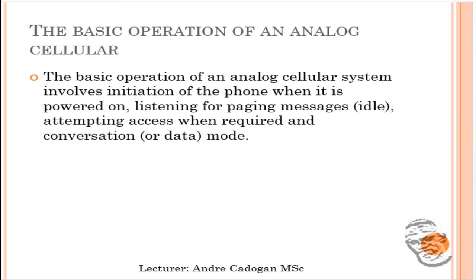Let us understand the basic operations of a cellular system — this is exam material. First and foremost, it involves call initiation when the phone is powered on, listening for paging messages, idle mode waiting until someone calls or attempting to access when required, and conversation mode in terms of stop-and-burst messages that take place while you are on a call.